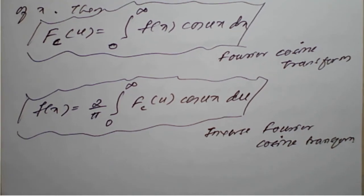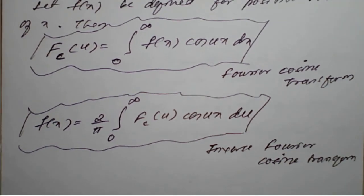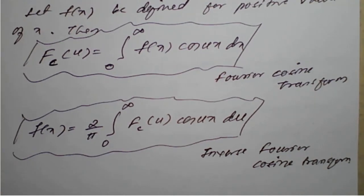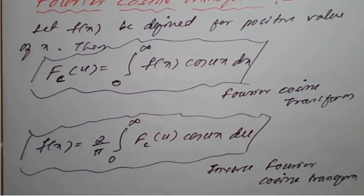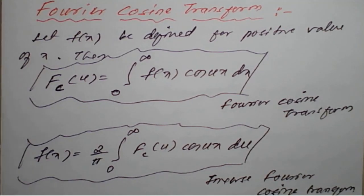These are the formulas for the infinite Fourier transform, Fourier sine transform, and Fourier cosine transform. Based on these, we will see the problems — how to solve the infinite Fourier transform, then the sine Fourier transform and cosine Fourier transform.